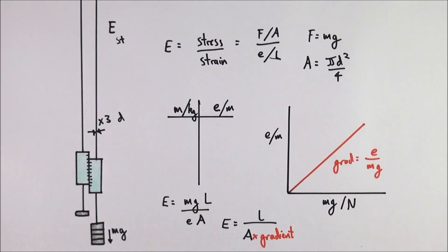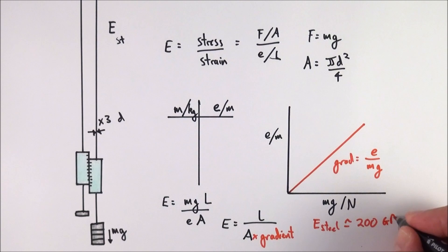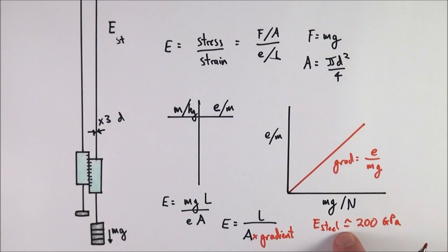If you do that, you should get a value for Young's modulus. Now steel is a hard, tough material, and Young's modulus for steel is in the region of about 200 gigapascals. That's 2×10¹¹ pascals, a really big number. That's the kind of thing that you should be aiming for.